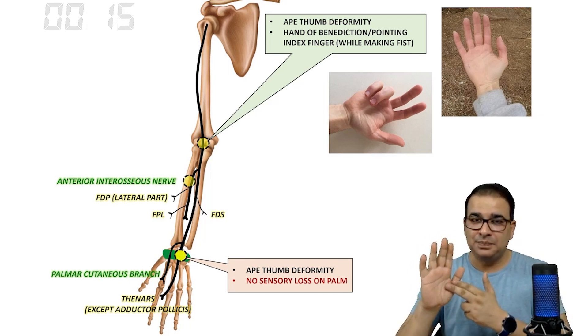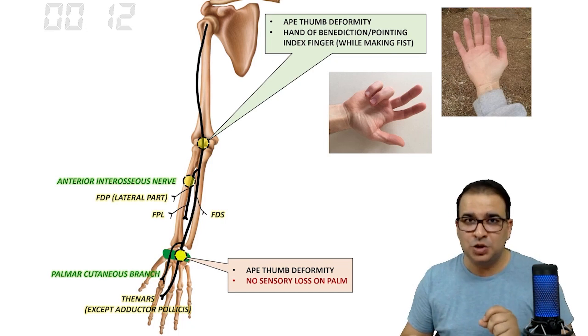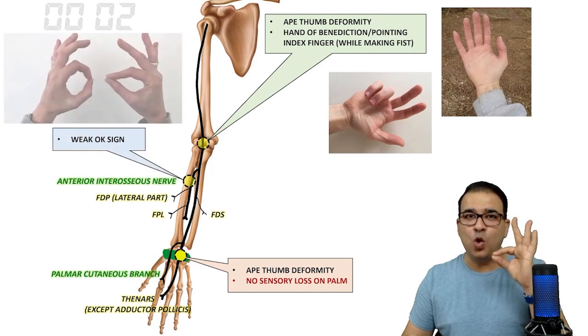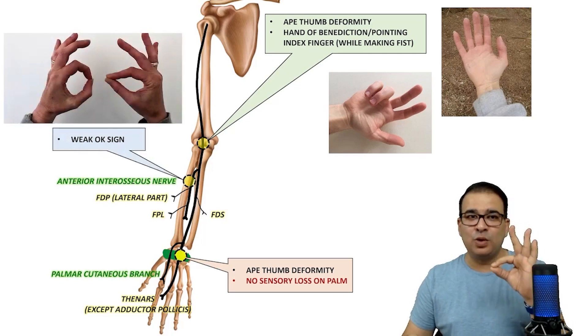If there is injury to anterior interosseous nerve, because the deep flexors are involved—the flexors which are responsible for flexing the distal interphalangeal joint of the index finger and the thumb—there will be weak okay sign. There will be weak okay sign if the anterior interosseous nerve is injured.